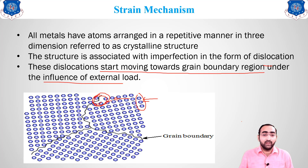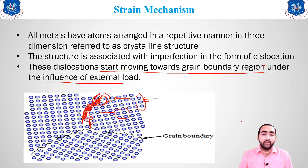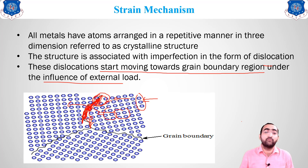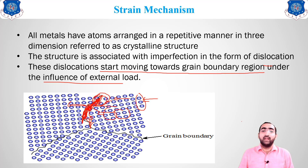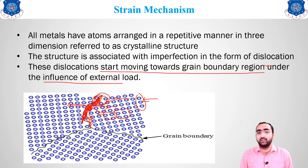Strength goes on increasing as dislocations at grain boundaries increase. The existing dislocations become effective obstacles, and more force is required for deformation to occur. The dislocation obstacle does not allow atoms to move forward in the grain, so more force is required — indicating the strength of the material has increased. This mechanism is known as strain hardening.